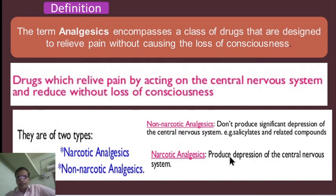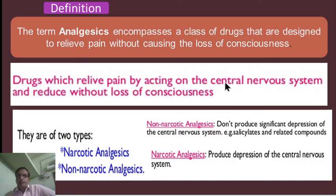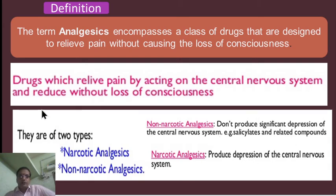The two categories are narcotic analgesics and non-narcotic analgesics. Narcotic analgesics produce depression on the central nervous system (CNS). Non-narcotic drugs do not produce any significant depression of the central nervous system. Examples of non-narcotic analgesics include salicylates and related compounds.